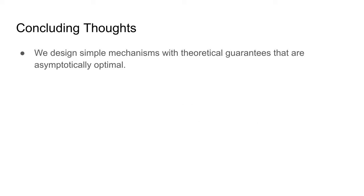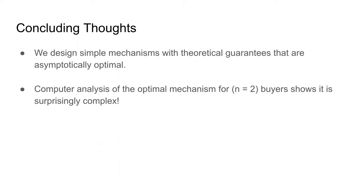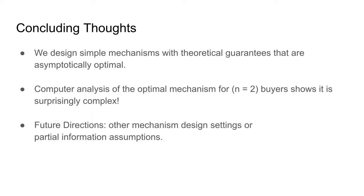Some concluding thoughts: we've designed simple mechanisms in our paper and backed them with theoretical guarantees that we show are asymptotically optimal. Interestingly, we also ran some computer analysis of the optimal mechanism for two buyers, and we show that it has a surprisingly complex structure. Interesting future directions might be to consider other mechanism design settings besides these three, or perhaps some slightly different partial information assumptions.